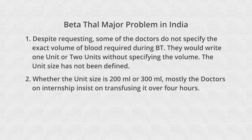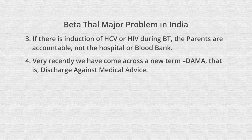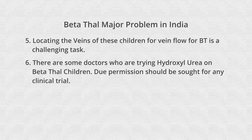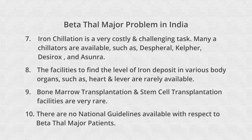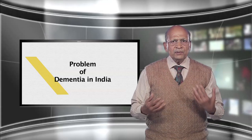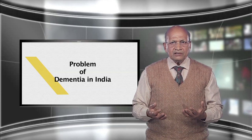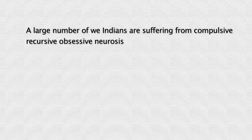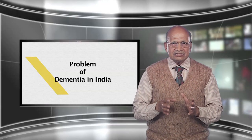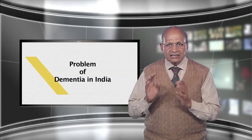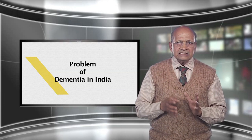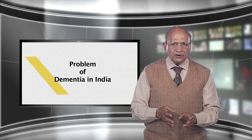Beta Thalassemia Major problem in India. Problems of dementia are on the increase in India. A large number of Indians are suffering from compulsive, recursive, obsessive neurosis, which causes anxiety, tension, stress, strain, inattention, headache, forgetfulness and diffidence. It is self-killing. There is an immediate need of thinking training in India.